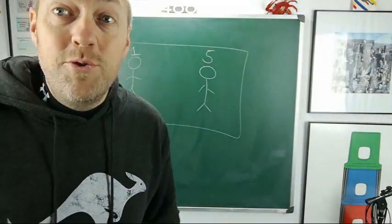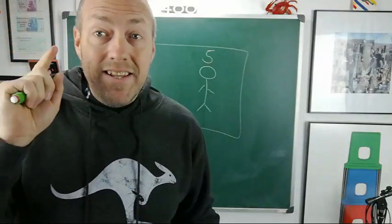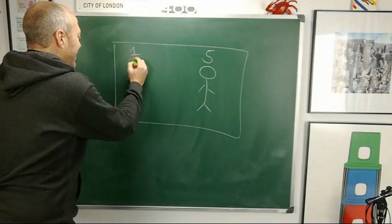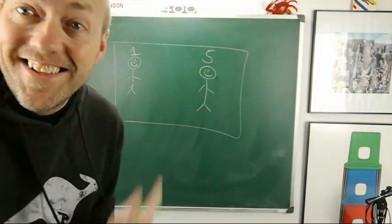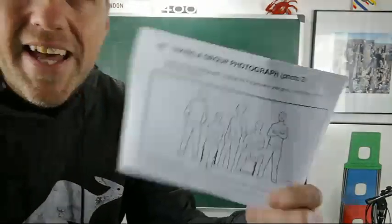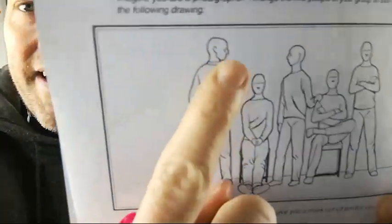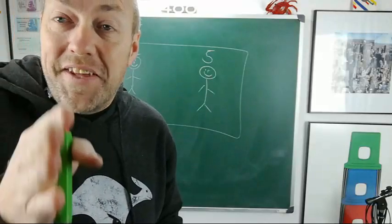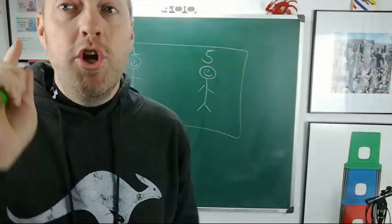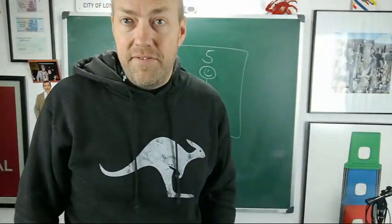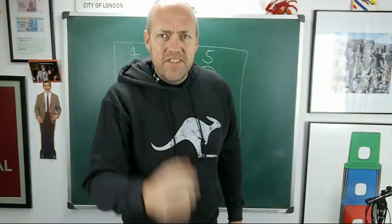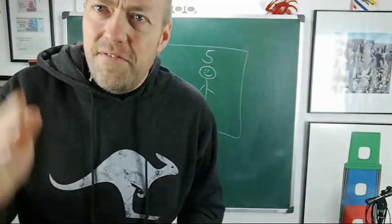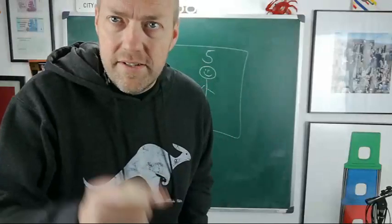Remember, in English, when you give an order, it's really simple. You just use the infinitive. For example, sit, stand, turn, go, eat. Infinitive is imperative. Infinitive is an order. The first guy, how can you give him an order?